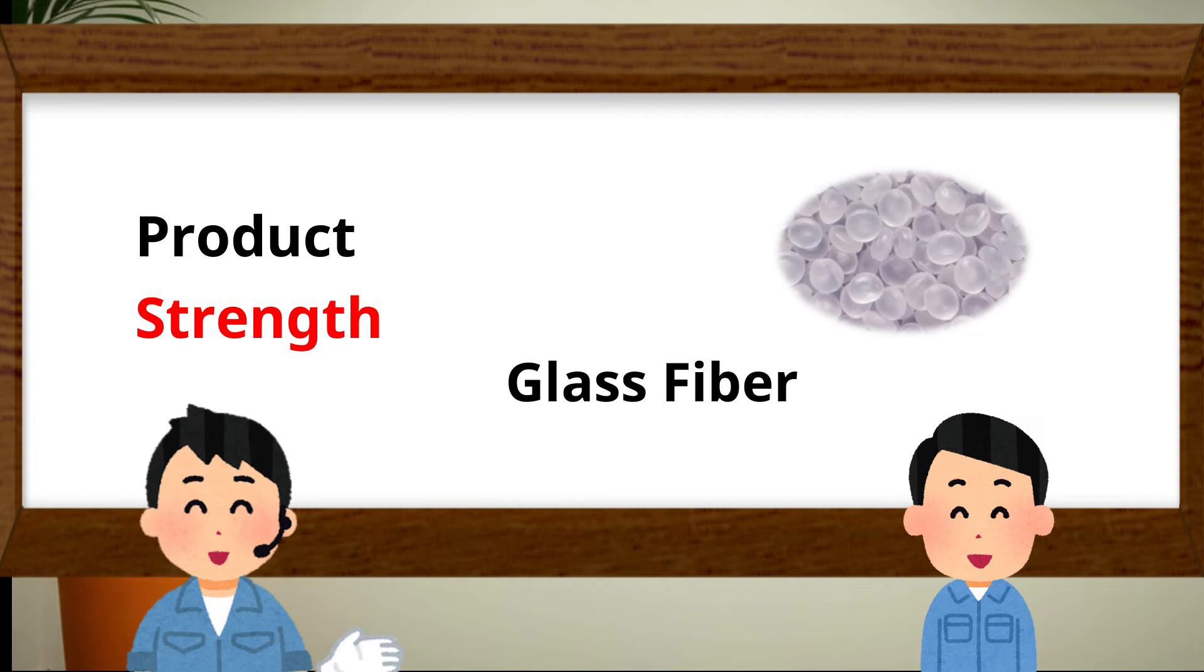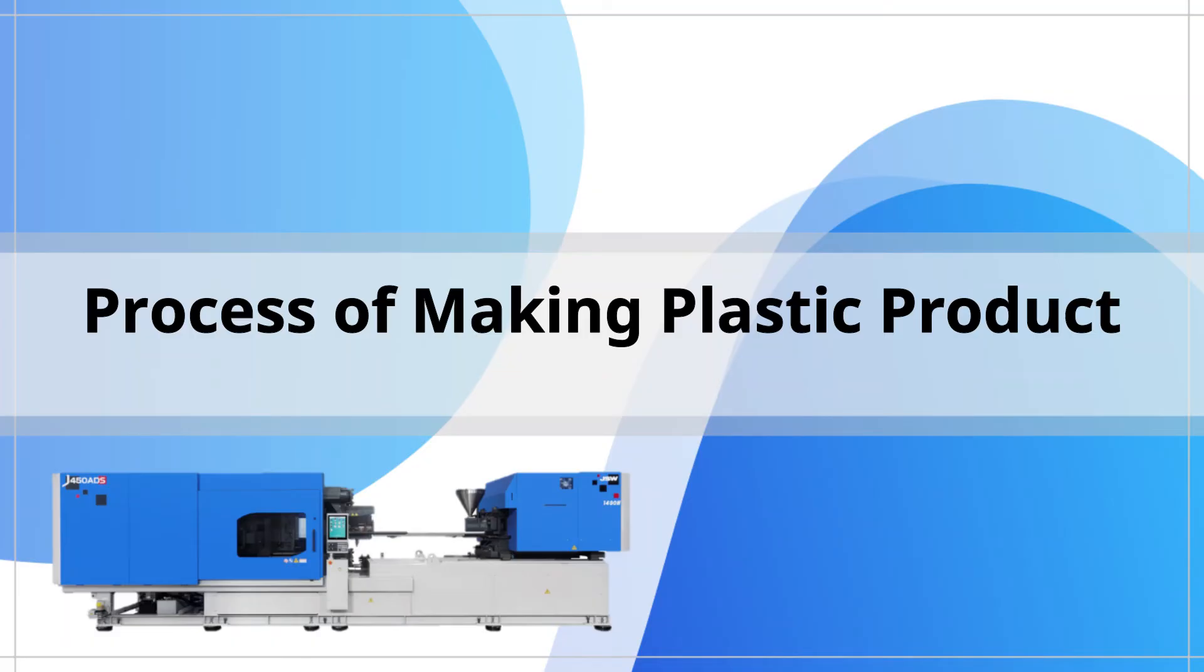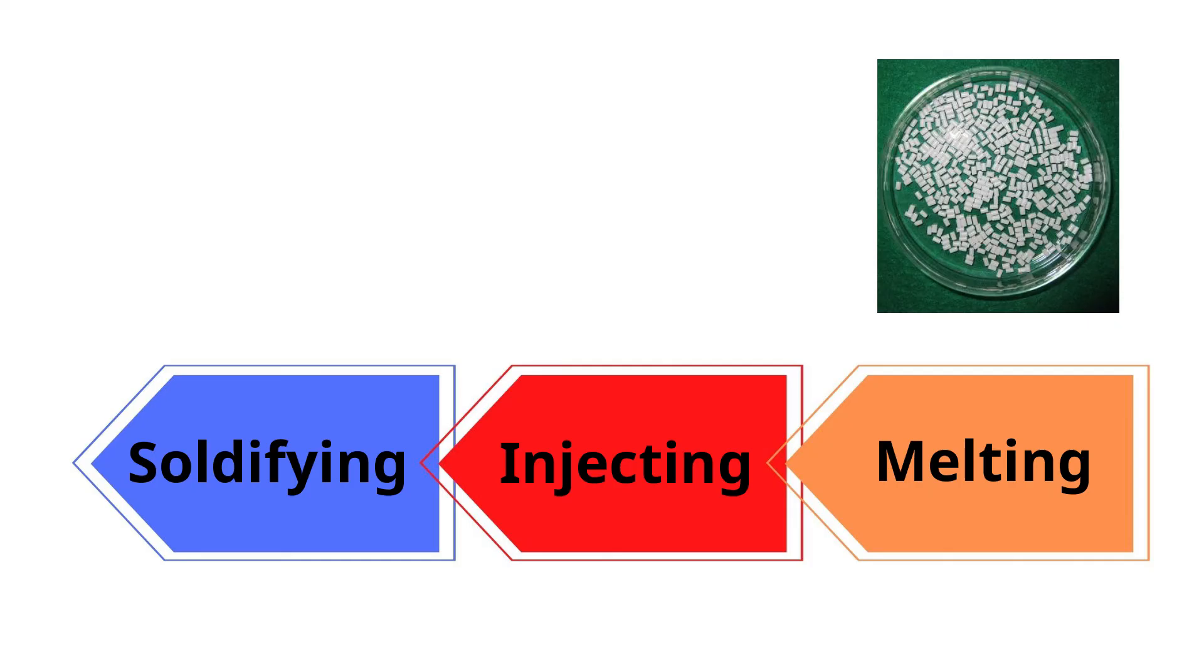Yes, so next, we will take a look at how to make plastic product. Let's see the process of thermoplastic injection molding. Generally, plastic materials are shaped like grain called pellets.